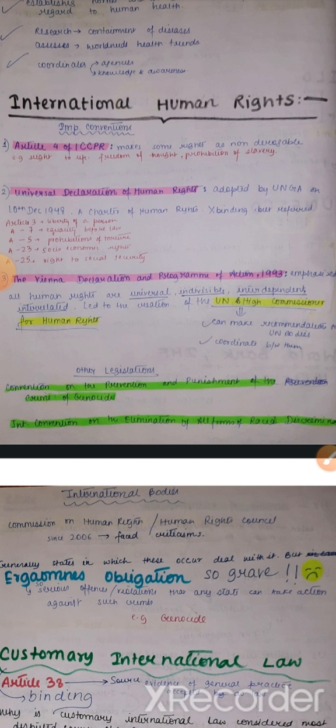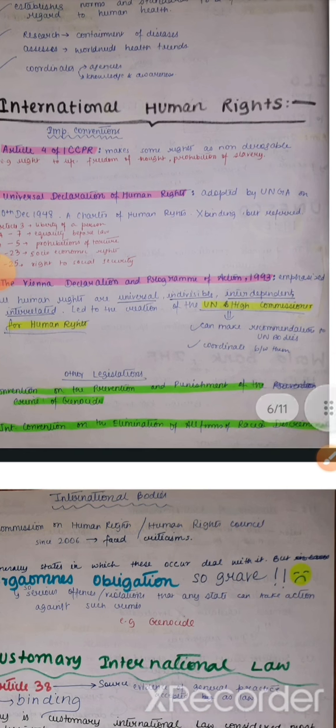This was the first thing it did — emphasizing upon universal, indivisible, and interdependent human rights. It also led to the creation of the UN High Commissioner for Human Rights. He has two powers mainly: he can make recommendations to different human rights bodies like UNESCO, and he can coordinate between the functions of these organizations.